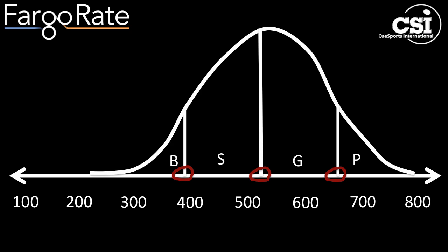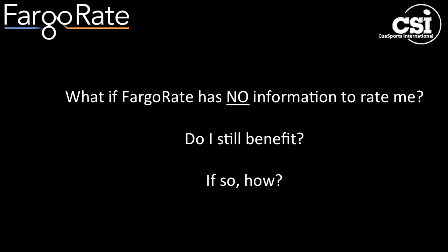Where are these lines drawn? We don't know yet — everybody just signs up for singles, and we only draw these cutoffs after everybody has signed up. Here's a couple of reasonable questions: What if Fargo Rate has no information to rate me? Do I still benefit, and if so, how?